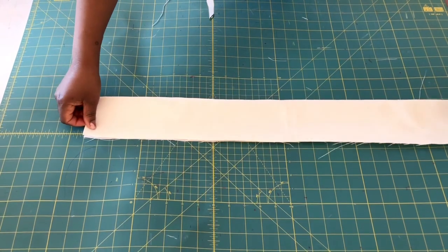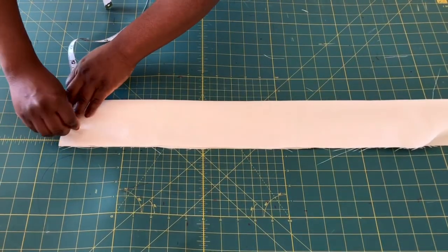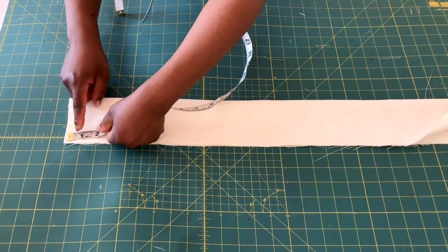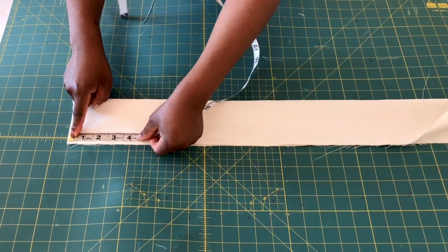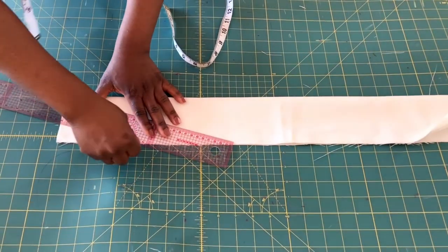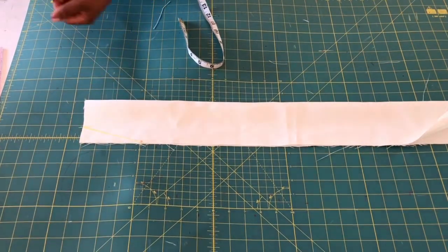Fold your main fabric with the right sides together. At the edge of this folded line, mark two inches right here. On this point, mark four inches downward and connect both of them with a straight line like so.